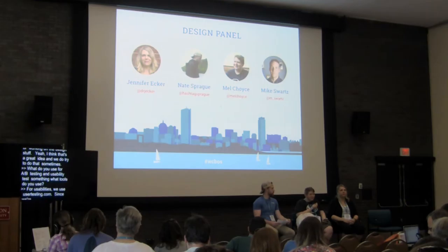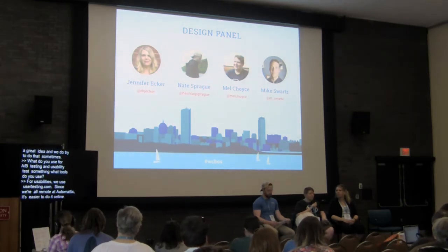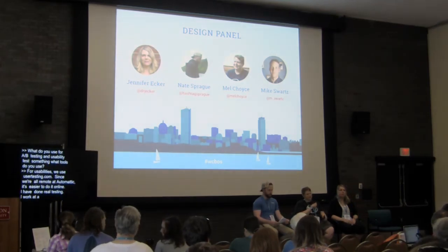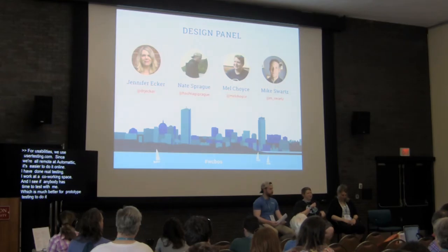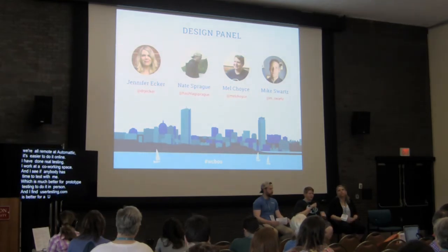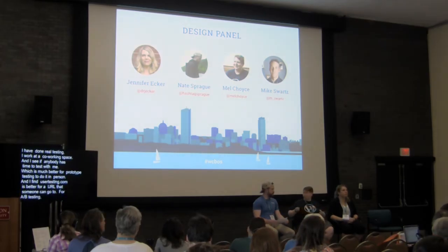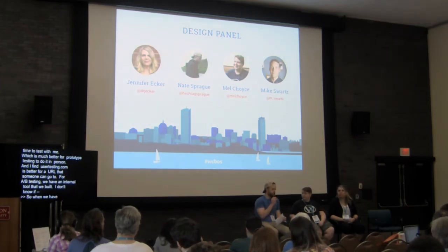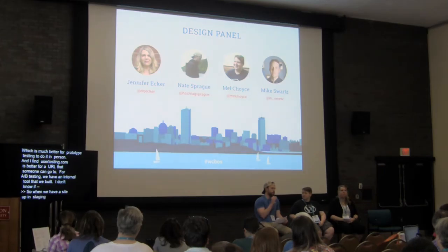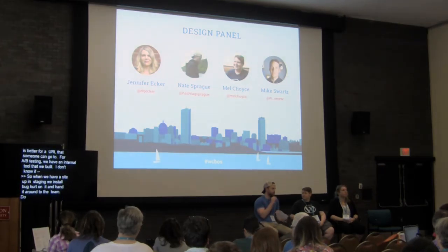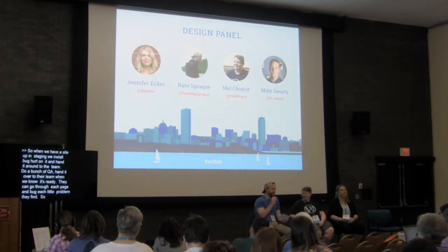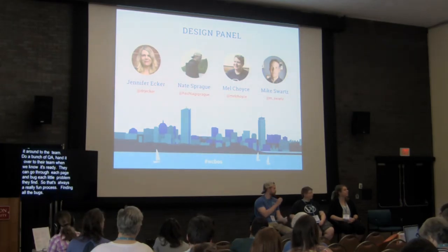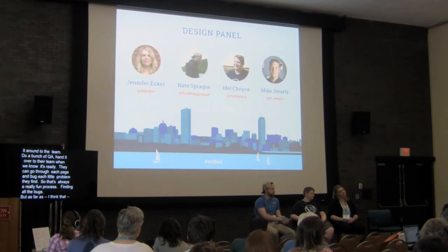Audience question: what tools do you use for A/B testing and usability testing? For usability testing, we use usertesting.com. Since we're all remote at Automattic, it's easier to do everything online. I have also done in-person user testing — I'll see if people at my co-working space in Cambridge have time to come test something, which is actually much better for prototype testing. usertesting.com is better if you have a URL someone can go to. For A/B testing, we actually have an internal tool we built. When we have a site up in staging, we install Bugherd and pass it around to our own team to do QA, then hand it over to the client's team when it's ready, and they can go through each page and flag any issues they find.